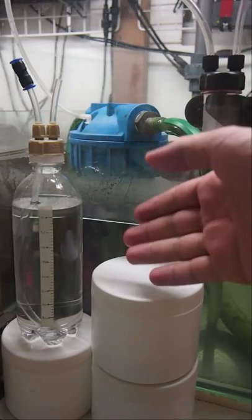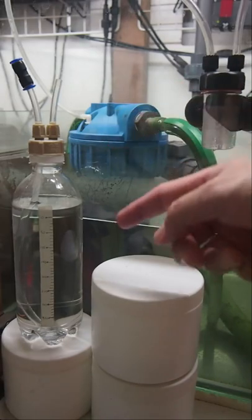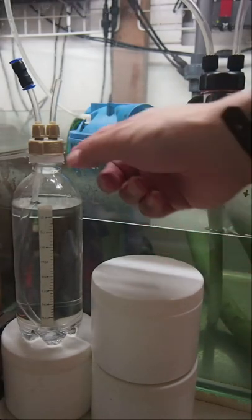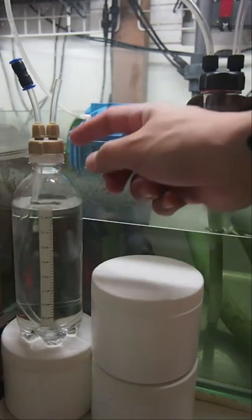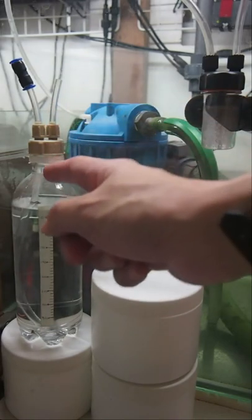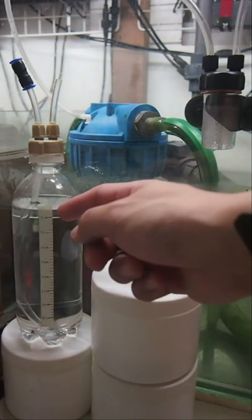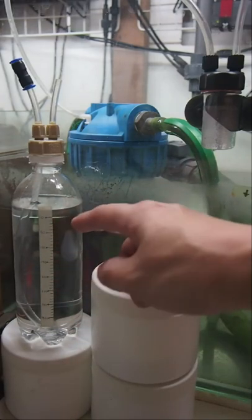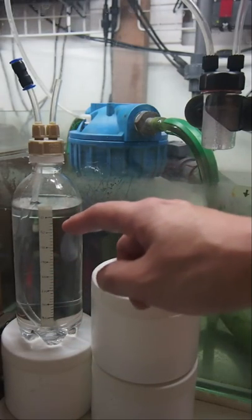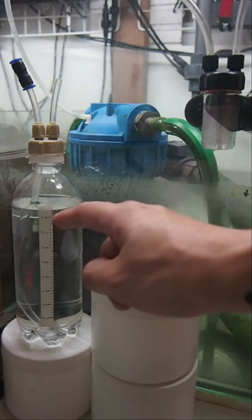This is my CO2 flow checker. It's a 500 milliliter PET bottle with two tubes coming out the top and one long tube in the middle. In the front here, you will see a piece of tape where I have some markings. All these markings represent 10 milliliters of water.